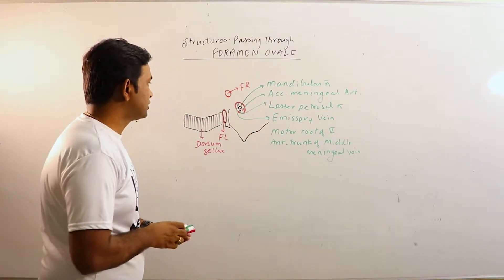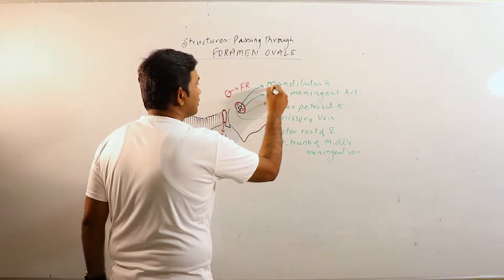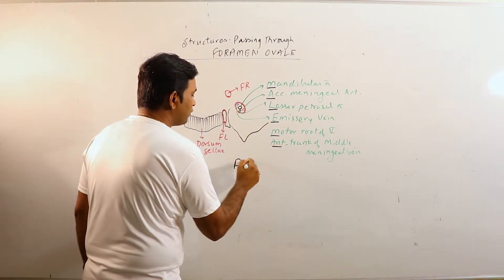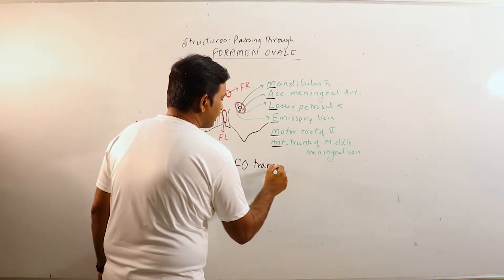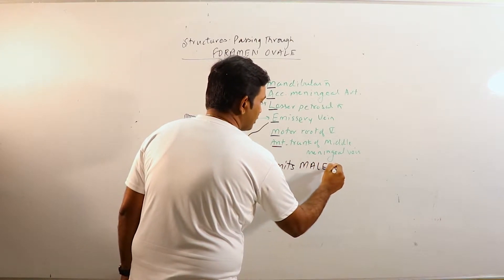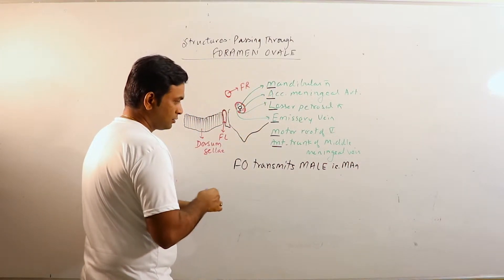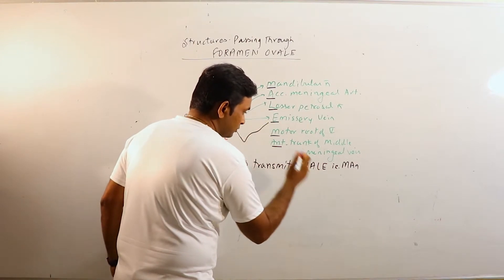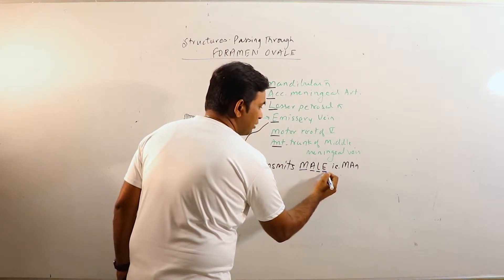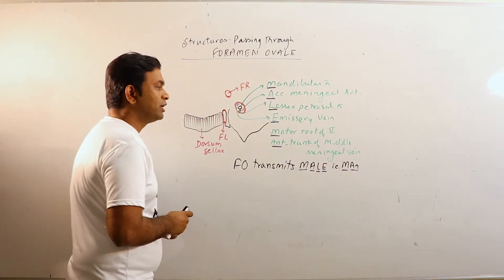So these are the structures that pass through the foramen ovale, and we can learn them by this mnemonic: foramen ovale transmits MALE — that is, Mandibular nerve, Accessory meningeal artery, Lesser petrosal nerve, Emissary vein, motor root of trigeminal nerve, and the anterior trunk of middle meningeal vein.